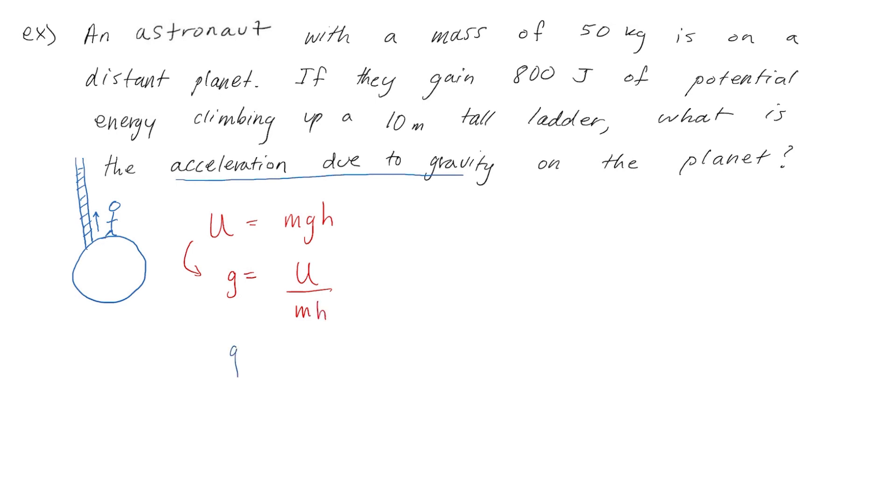And then all we need to do is plug in our values for the potential energy, the mass, and the height. And when we do that we find that the acceleration due to gravity is about 1.6 meters per second squared.